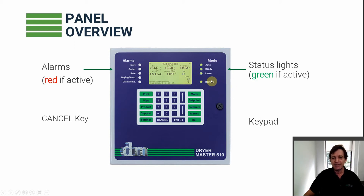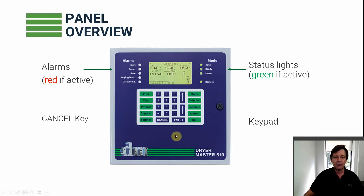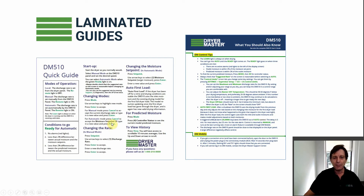Over here are the mode lights, which are green. We'll go into more detail on those as we go. The Cancel key works as both a cancel and a back button — wherever you are in the menus, just keep hitting Cancel to get back to the main screen, and if there's an alarm, hit Cancel to stop the alarm noise. With every Dryer Master system you get two laminated guides to help you remember how to do things — keep them close to your Dryer Master panel.